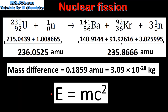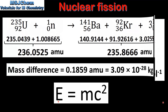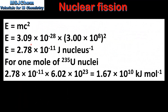Just like in the previous example, we will use the equation E equals MC squared to calculate the energy released. The first step is to multiply the mass difference between the reactants and the products by the speed of light squared. This gives us 2.78 times 10 to the negative 11 joules per nucleus.